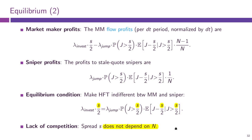The big takeaway is that this spread, as determined in equilibrium by this condition, does not depend on n. If you look at the expression, n just does not enter anywhere — meaning that however many high-frequency traders are attracted to the market by these arbitrage opportunities, this will not change the spread, will not improve liquidity, and will not narrow the prices that noise traders face. Having more high-frequency traders does not really benefit the market.